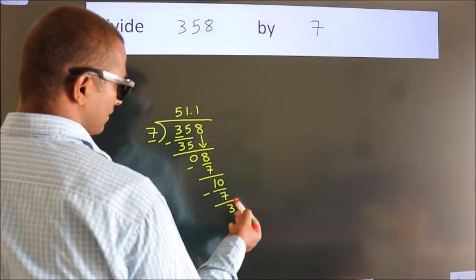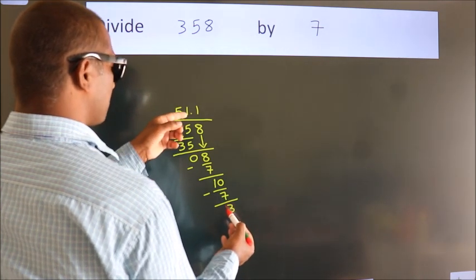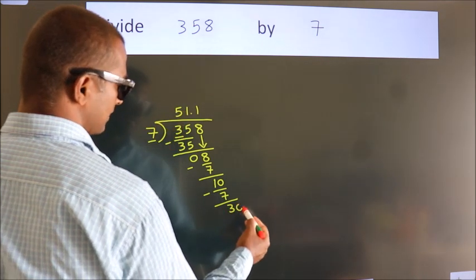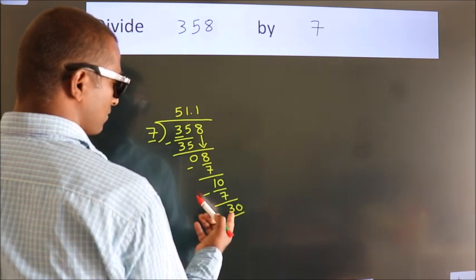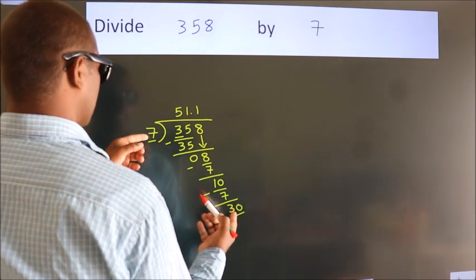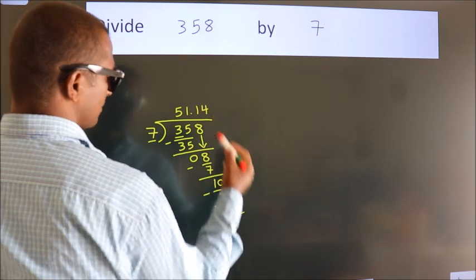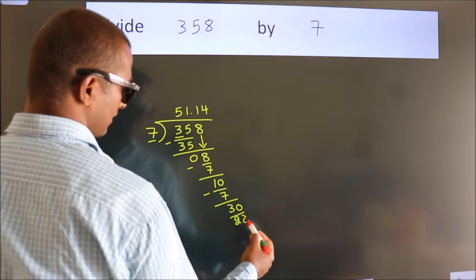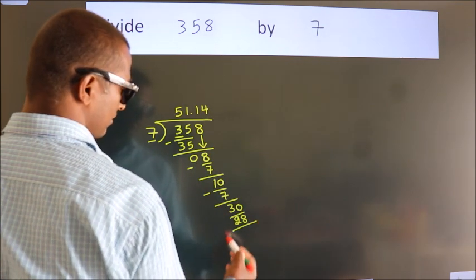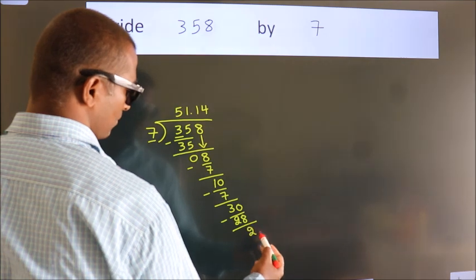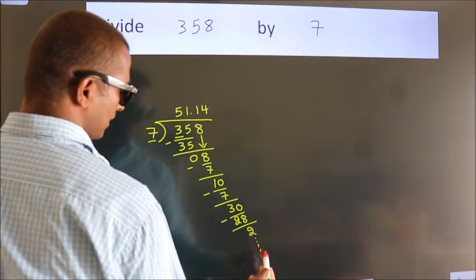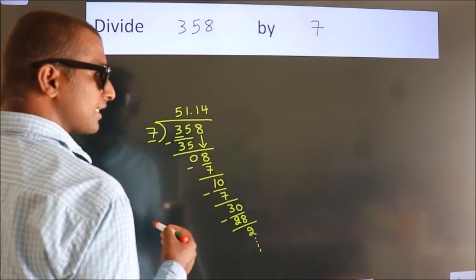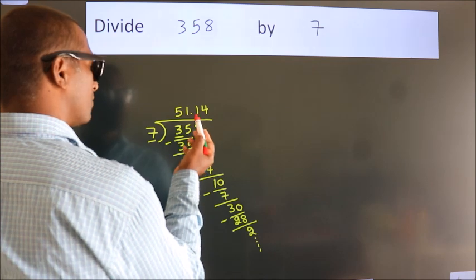After this, we already have the decimal. So directly take 0. So 30. A number close to 30 in 7 table is 7 fourths, 28. Now we subtract. We get 2. And the division continues. It is enough if we do up to 2 decimal places.